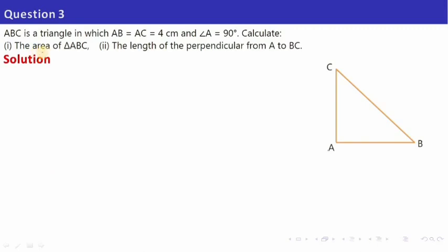In the next problem, triangle ABC is given with AB equals AC equals 4 centimetre and angle A is 90 degrees. The diagram shows angle A is 90 degrees. Since AB and AC are equal at 4 centimetre each, this is 4 cm and this is also 4 cm. First, find the area of the triangle.